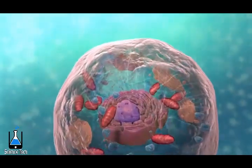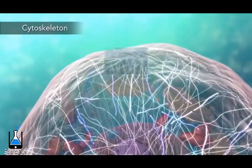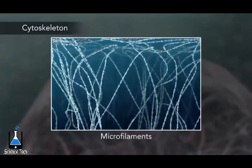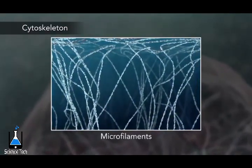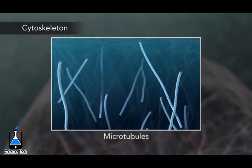Meanwhile, a cell maintains its shape through a cytoskeleton. The cytoskeleton includes the thread-like microfilaments, which are made of protein, and microtubules, which are thin, hollow tubes.